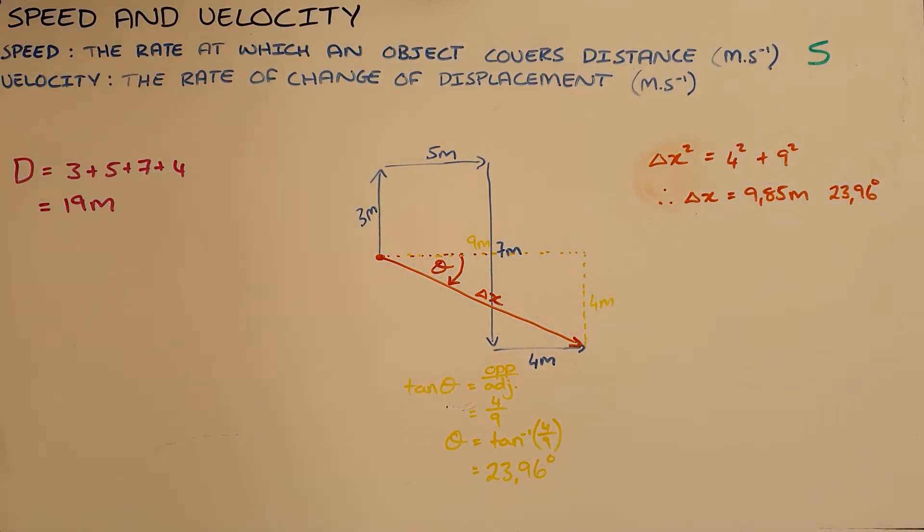In our previous example we calculated the distance covered by this object, where we know that distance is the length of the path taken. We said the distance covered was 19 meters.